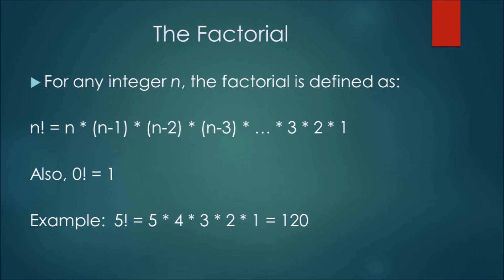As an example, 5 factorial is 5 times 4 times 3 times 2 times 1, which is equal to 120.